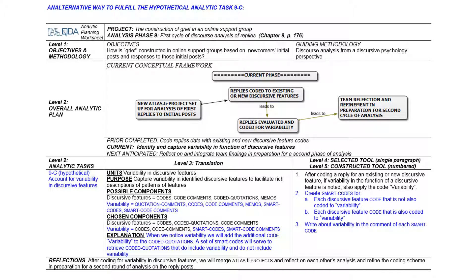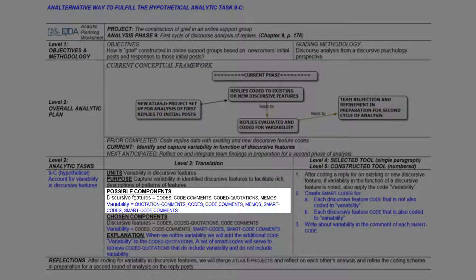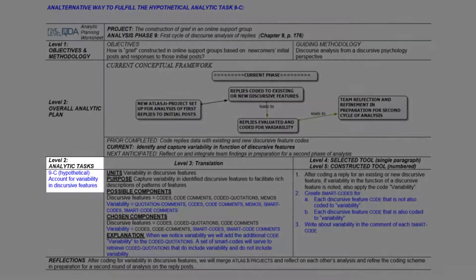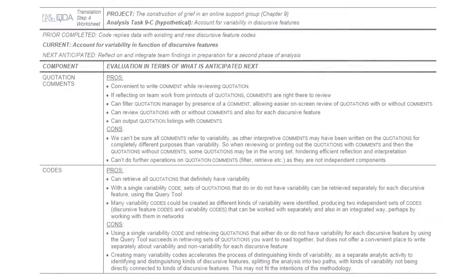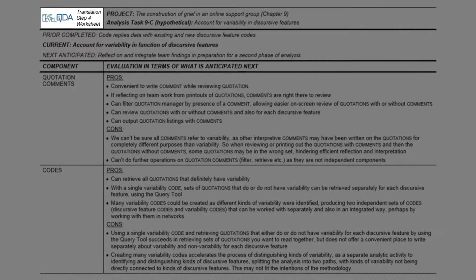We are now ready for step 4 of translation: to evaluate the alternative components identified in step 3 to fulfill the hypothetical task 9c. Here is a worksheet that makes explicit what goes through the mind of an expert user of Atlas TI when thinking through the pros and cons of each possible component. This step 4 worksheet is included in the PDF that you can download.